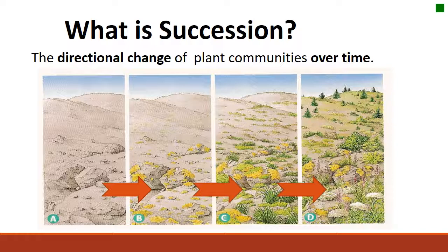Succession is really just a description of how plant communities change over time in a directional way — how there's a succession over time of plant communities, starting from being disturbed or not having much vegetation, to having a full complement of plants and animals in a community.